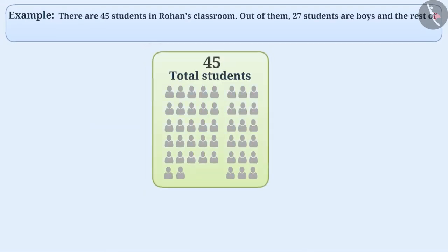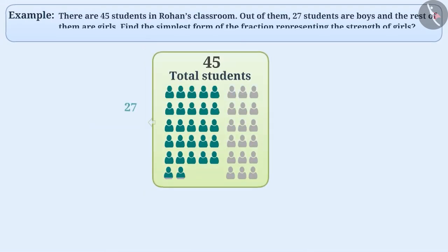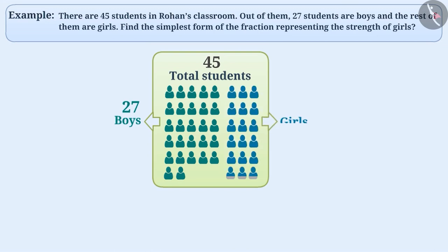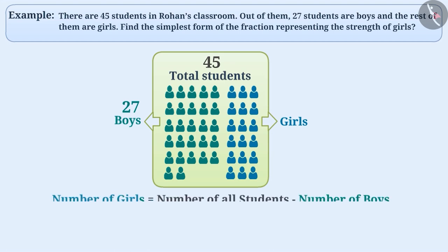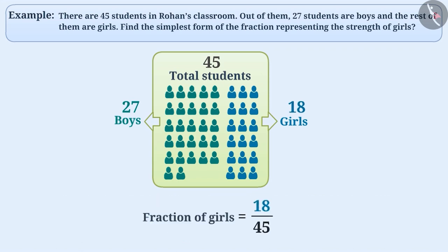Example 2: There are forty-five students in Rohan's classroom. Out of these, twenty-seven are boys and the rest are girls. The number of girls equals forty-five minus twenty-seven, which is eighteen. Since there are eighteen girls out of forty-five students, the fraction will be eighteen by forty-five.